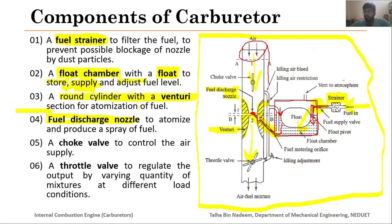Next we have the choke valve, whose purpose is simply to control the amount of air. Sometimes if the choke valve is not operating properly in a bike you rotate it to allow more air to enter the combustion chamber so the bike has a better chance to start. Then we have the throttle valve at the other end of the carburetor — its purpose is to regulate the amount of air-fuel mixture going into the intake manifold and then into the combustion chambers depending upon the load requirements.